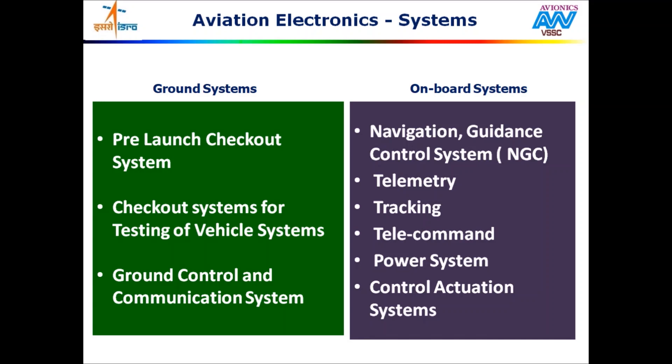Avionic systems are classified based on function as ground systems and on-board systems. Ground systems are those used for launching of satellites and related functionalities. Ground systems consist of three subsystems: one, pre-launch checkout systems, which evaluate the performance of a rocket before launch; two, checkout systems for testing of vehicle systems, used during manufacturing; and three, ground control and communication systems, required for launching and controlling satellites.